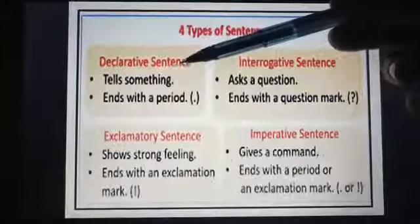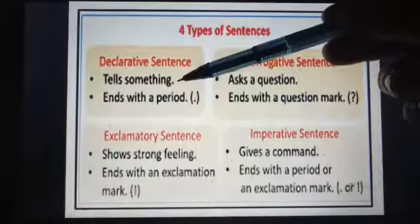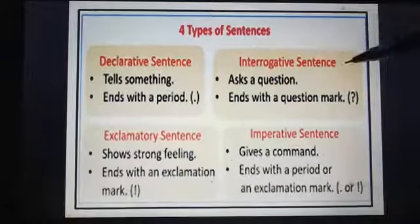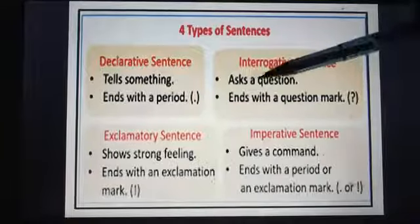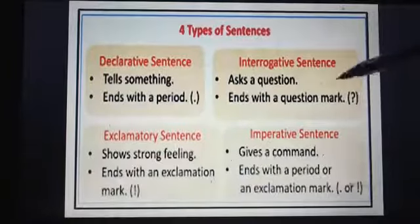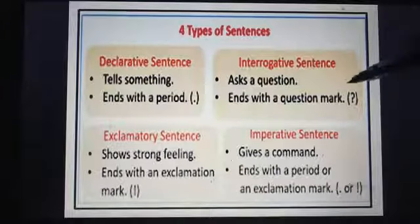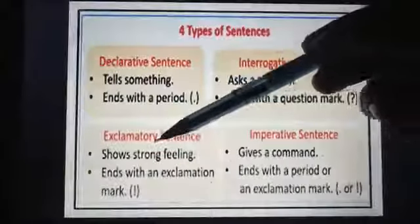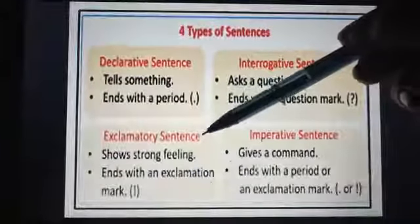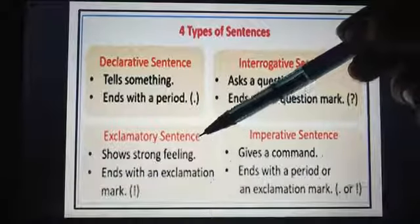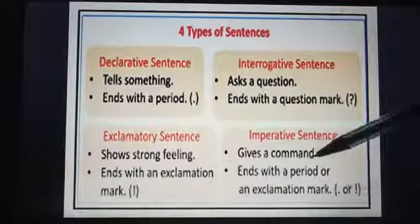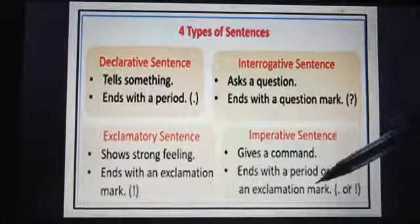A Declarative sentence tells something. These are simple statements and they always end with a full stop. An Interrogative sentence always asks a question and it ends with a question mark. An Exclamatory sentence shows strong feeling and ends with an exclamation mark — these sentences show a sudden feeling of excitement or sudden reaction. An Imperative sentence gives a command and ends with a full stop or an exclamation mark.